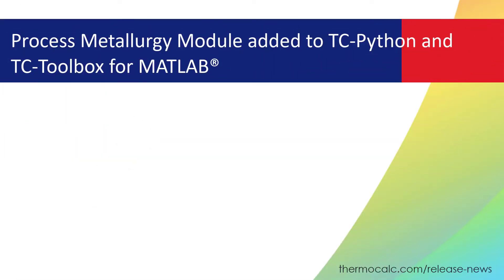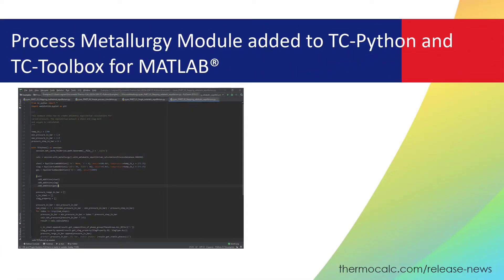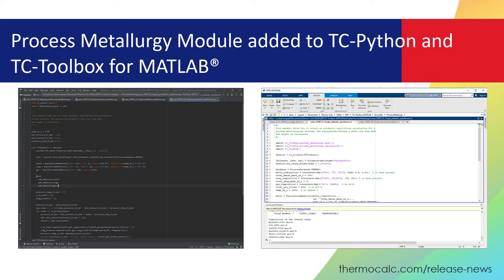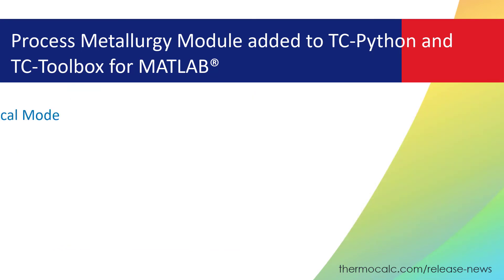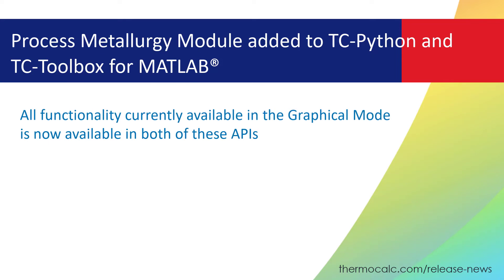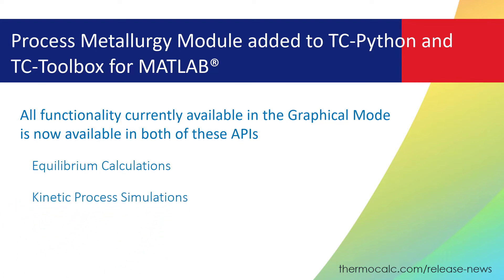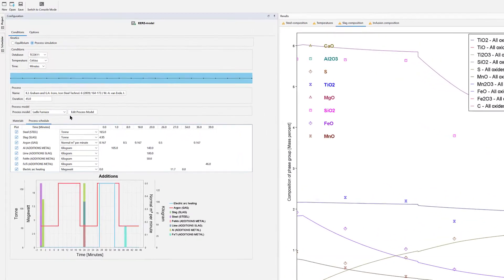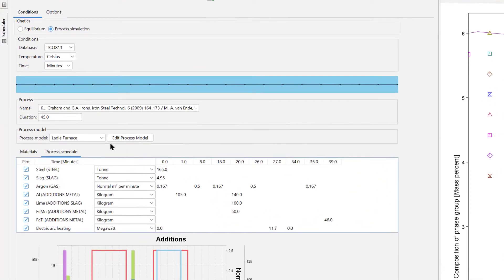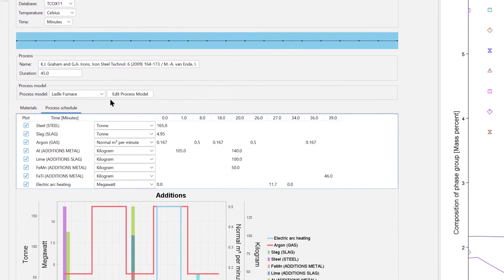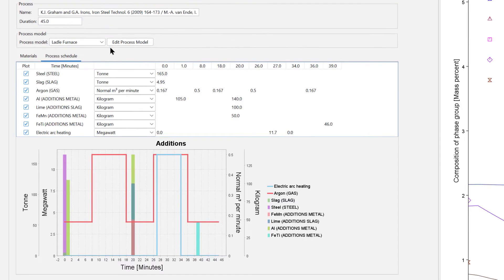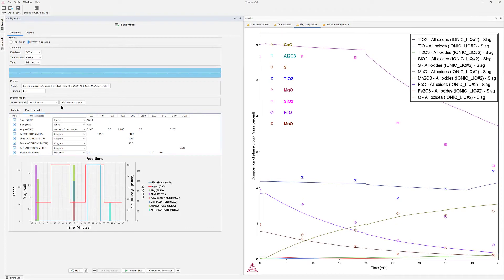The Process Metallurgy module is now available in both TC-Python and TC-Toolbox for MATLAB, our two most powerful APIs. All functionality currently available in the graphical mode version of the Process Metallurgy module is now available in both of these APIs, including equilibrium calculations and kinetic process simulations. The strength of the Process Metallurgy module is that thermodynamic calculations and even full simulations of a liquid steelmaking process, such as a ladle furnace, can be set up easily and the results can be easily interpreted.